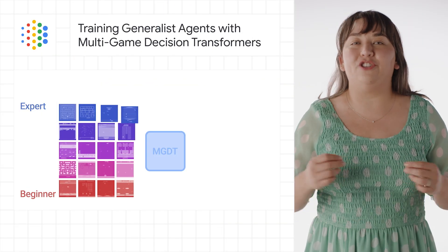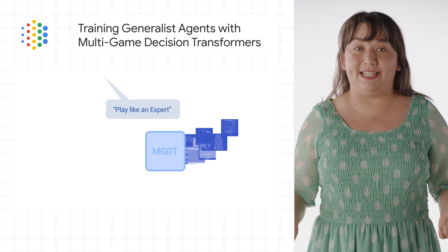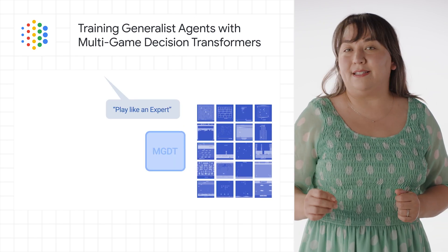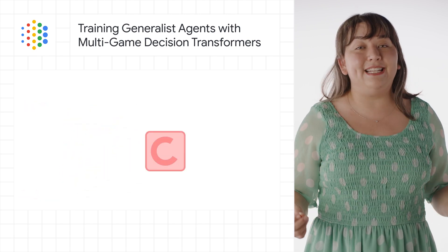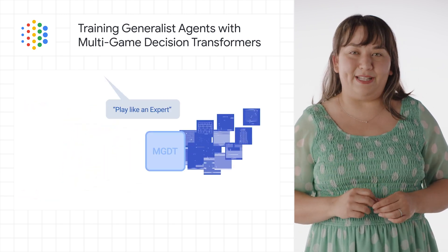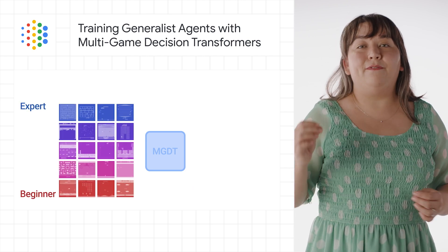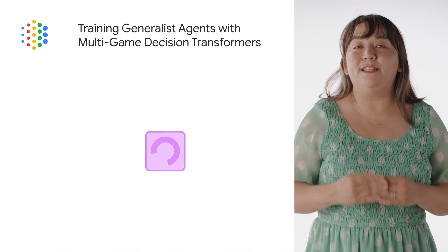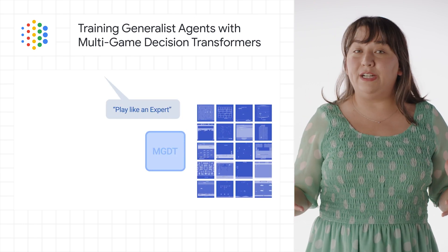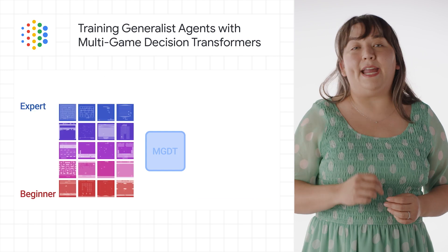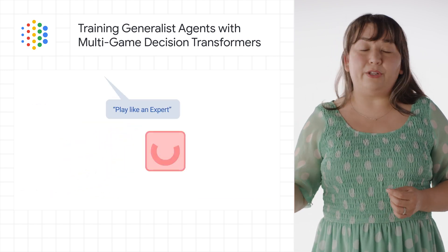We explored how to build a generalist agent to play many video games simultaneously. Our model trains an agent that can play 41 Atari games simultaneously at close to human performance, and can also be quickly adapted to new video games via fine-tuning. This approach significantly improves upon the few existing alternatives to learning multiple game agents, such as temporal differences learning or behavioral cloning.